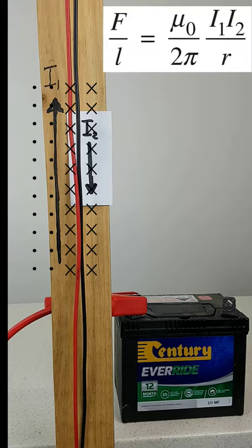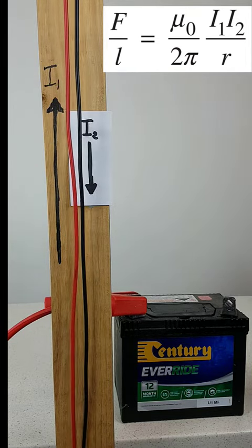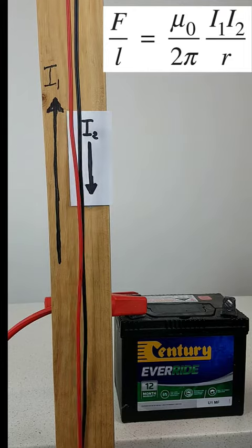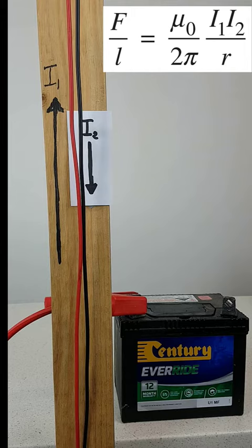When the wire on the right carries a current downwards in an opposite direction, a repulsive force is produced due to the right-hand rule. The magnitude of this force per unit length depends on the product of the two currents divided by the distance between them.